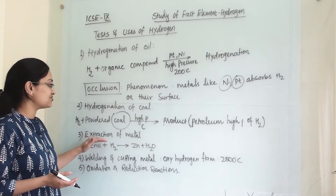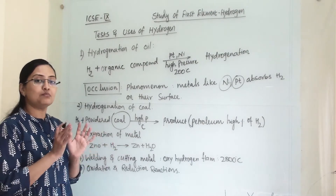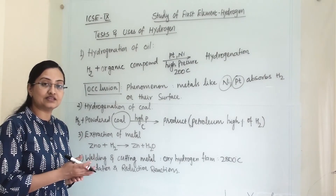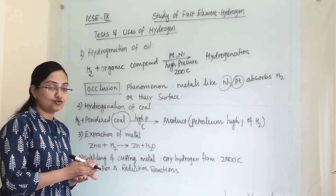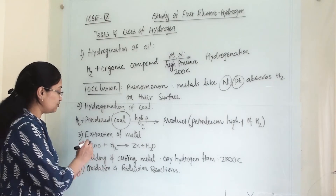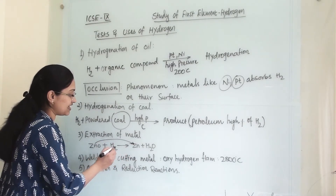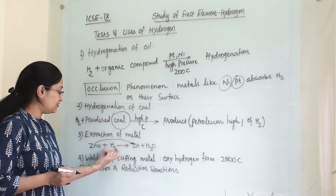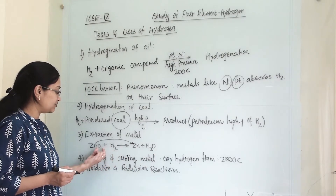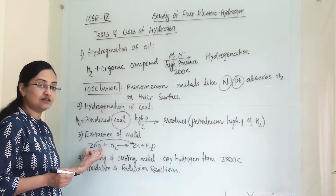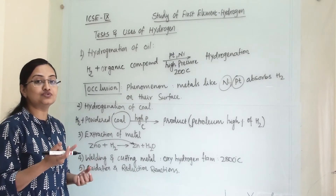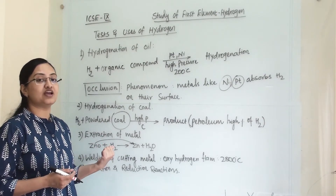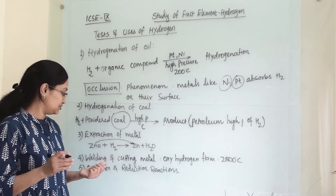Third is in the extraction of metals. If you take any metal oxide and react it with hydrogen gas, the metal is reduced and we get the metal and water. Hydrogen reacts with the oxygen from the metal oxide, so here we are using hydrogen as a reducing reagent.